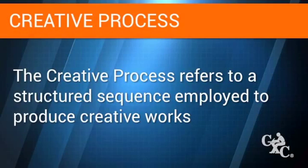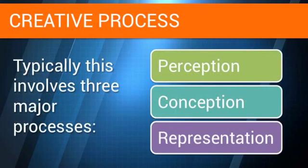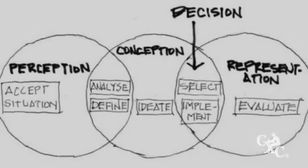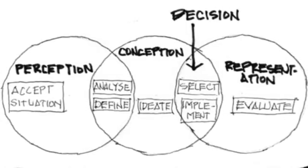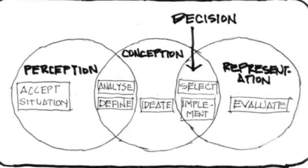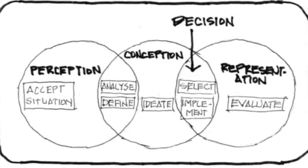Creativity is the use of imagination or original ideas used in the creation of digital works. These two definitions take us into the creative process. The creative process refers to a structured sequence employed to produce creative works. This typically involves three major processes: perception, conception, and representation. The creative process provides a tool that helps to redefine problems, allowing persons to come up with novel solutions and then take action on these new ideas.